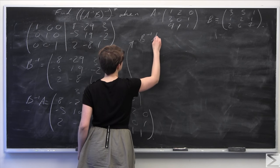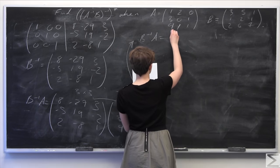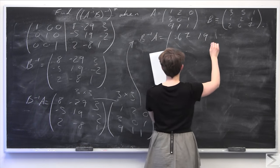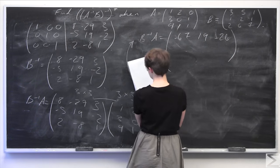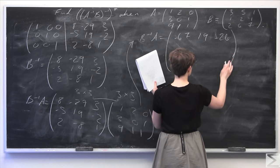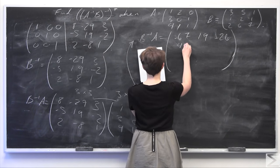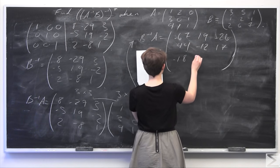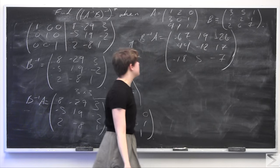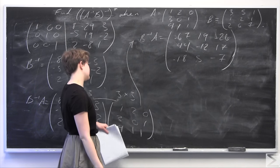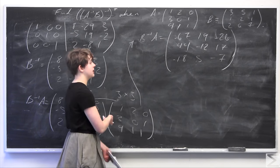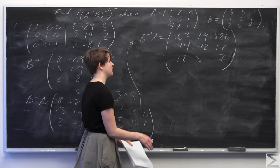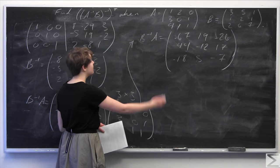B inverse times A equals the matrix: row 1: -67, 19, -26; row 2: 44, -12, 17; row 3: -18, 5, -7. This is easiest to perform with a calculator, though you can do it by hand to minimize potential algebra mistakes.